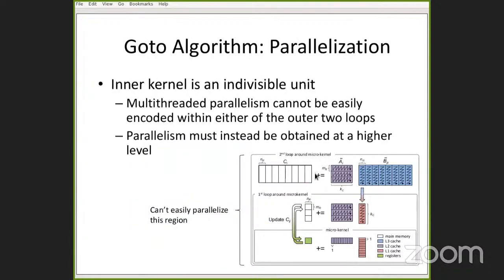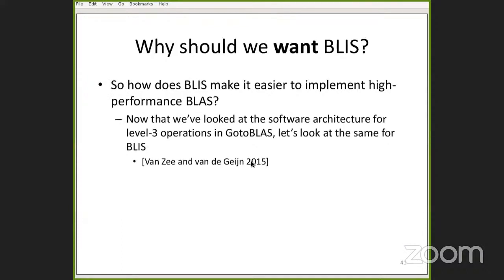Moving on to parallelization: this inner kernel is an indivisible unit. You can't really break it up for parallelism — you have to obtain parallelism at a higher level in the loops surrounding this kernel. So we've talked about the Goto approach and its drawbacks. Let's now talk about BLIS. How does BLIS make any of this easier?